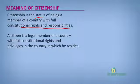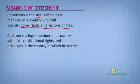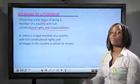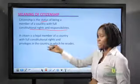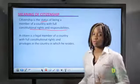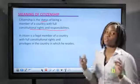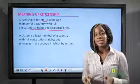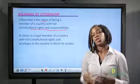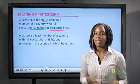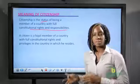Citizenship is the status of being a member of a country with full constitutional rights and responsibilities. Which brings us to who a citizen is. A citizen is simply a member of a country who has constitutional rights and responsibilities. So citizenship is the status of being a member of a country, while a citizen is the individual himself who is a legal member of a particular country. And since that individual is a citizen, he or she is entitled to rights and also has responsibilities.